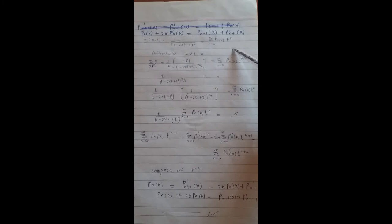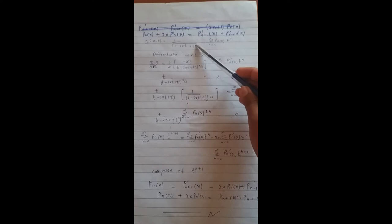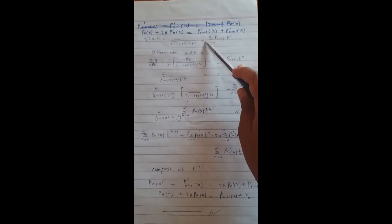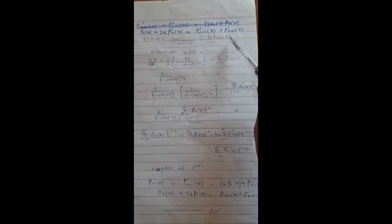To prove the second recurrence relation, we again use the generating function. The generating function of the Legendre polynomial is 1 over square root of (1 minus 2xt plus t squared) equals summation Pn(x)·tⁿ.